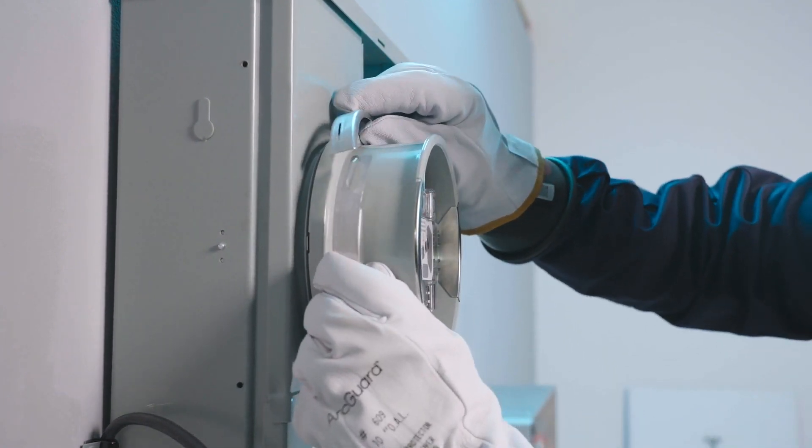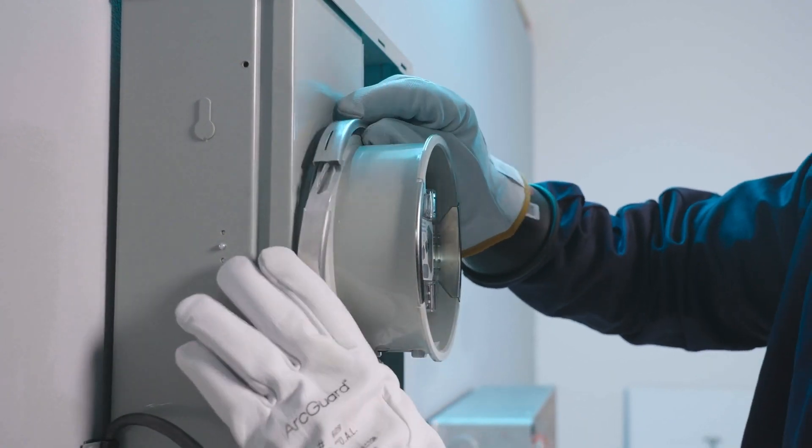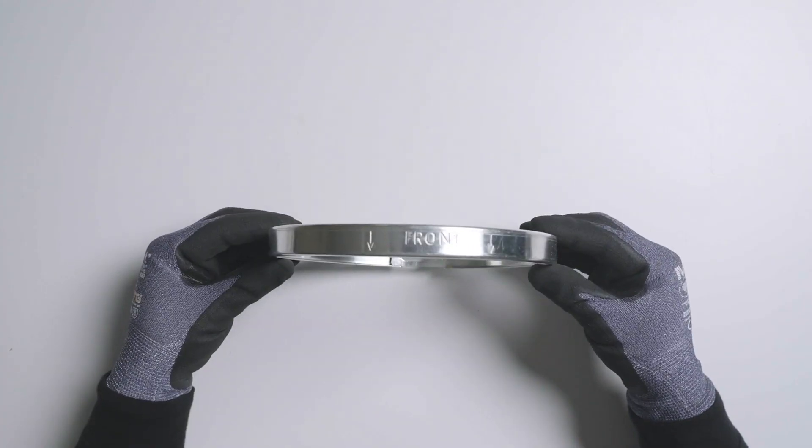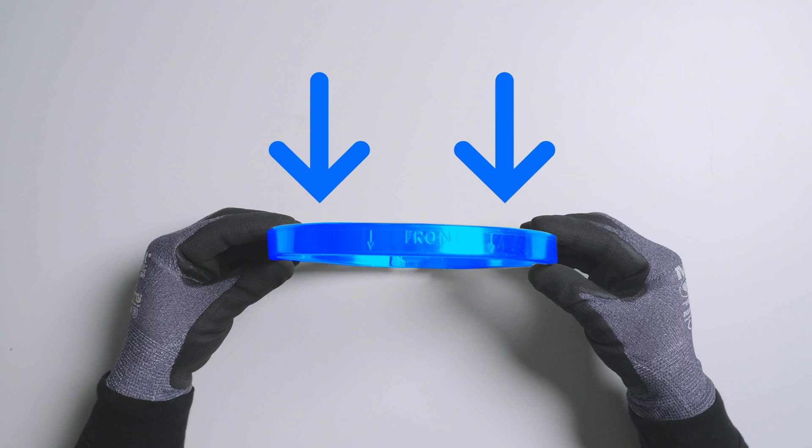For ring-type meter sockets, install the ceiling ring to secure Backup Switch to the meter socket. Ensure the ceiling ring is oriented so that the front arrow etched into the ring faces toward the meter and not the panel.